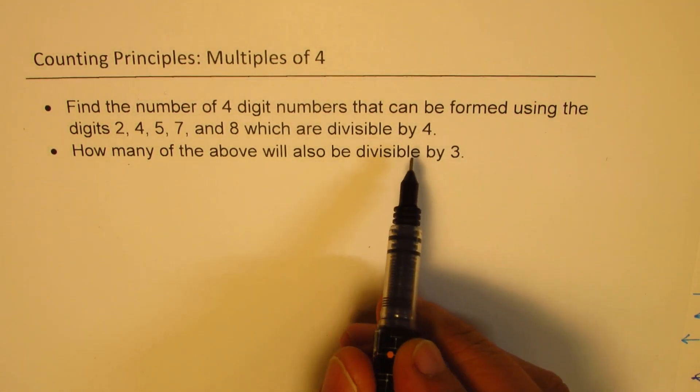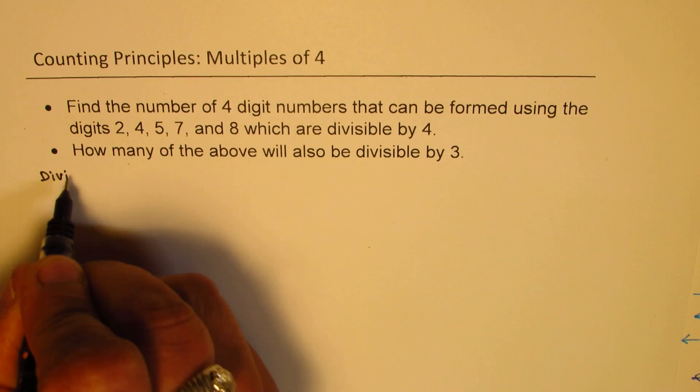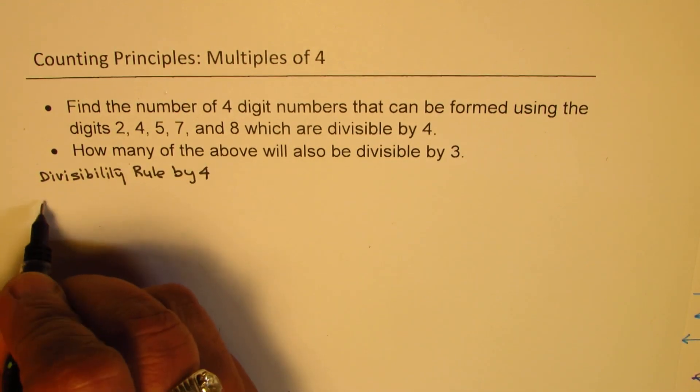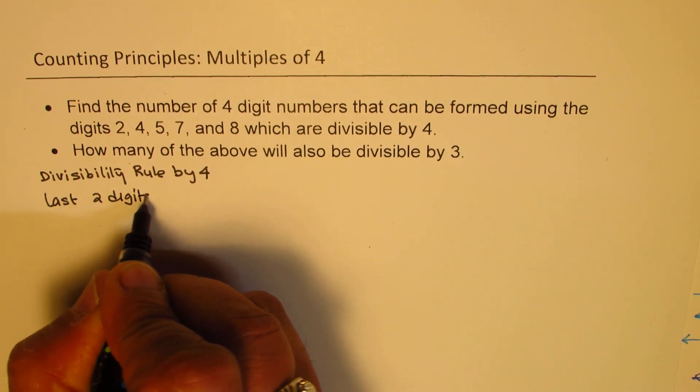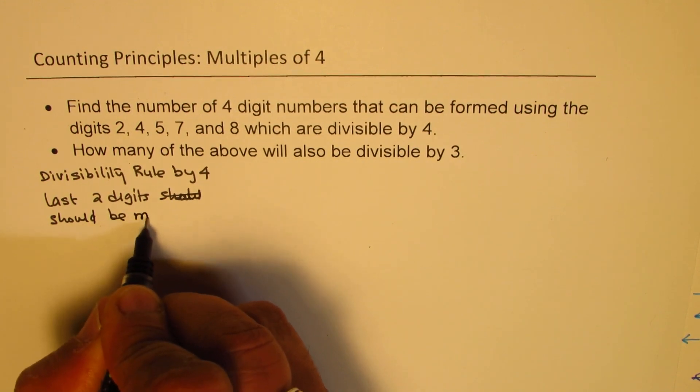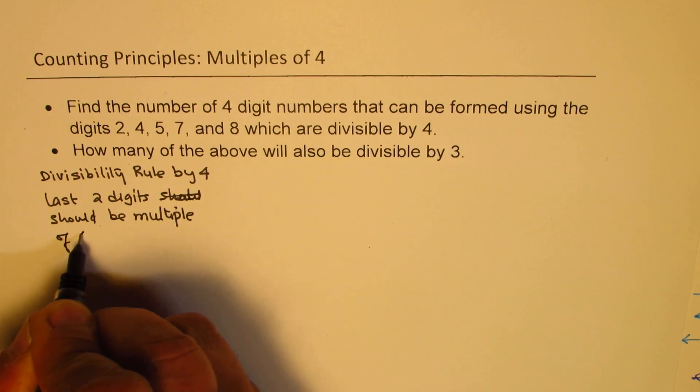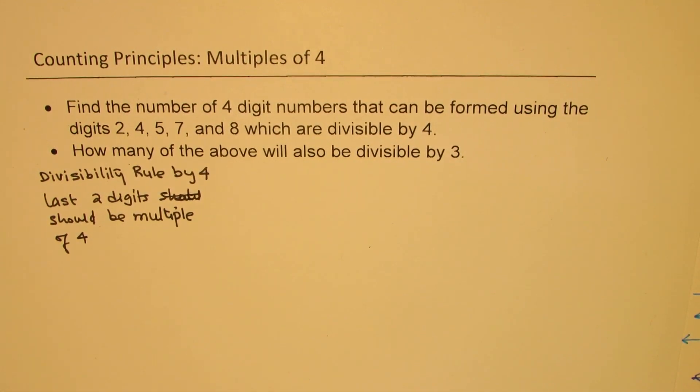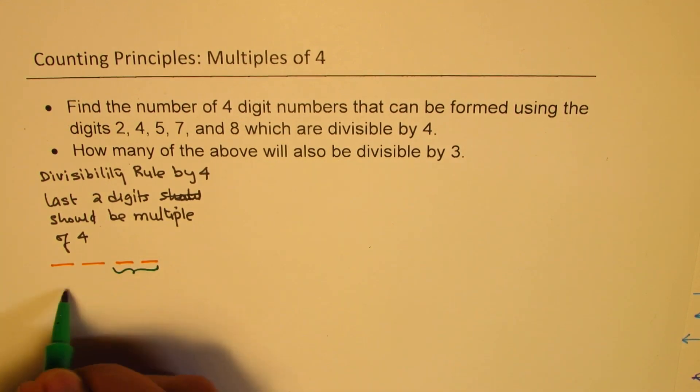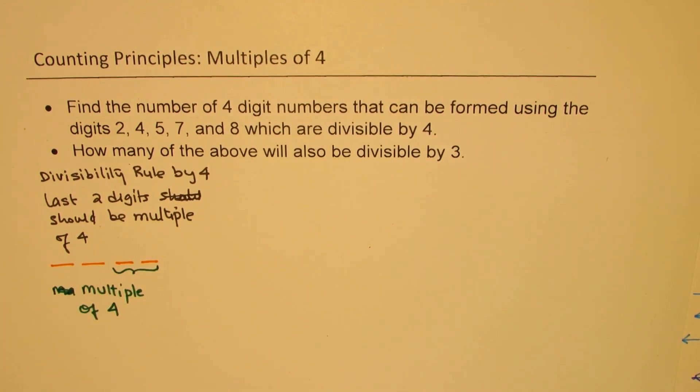So let's begin with the divisibility rule of 4. The rule is that the last two digits should be multiple of 4. That is what the rule is. So we have basically four digits. And we are saying that these two combined should be multiple of 4. So we have to look for combinations for last two multiples of 4. That is the basic criteria to begin with.